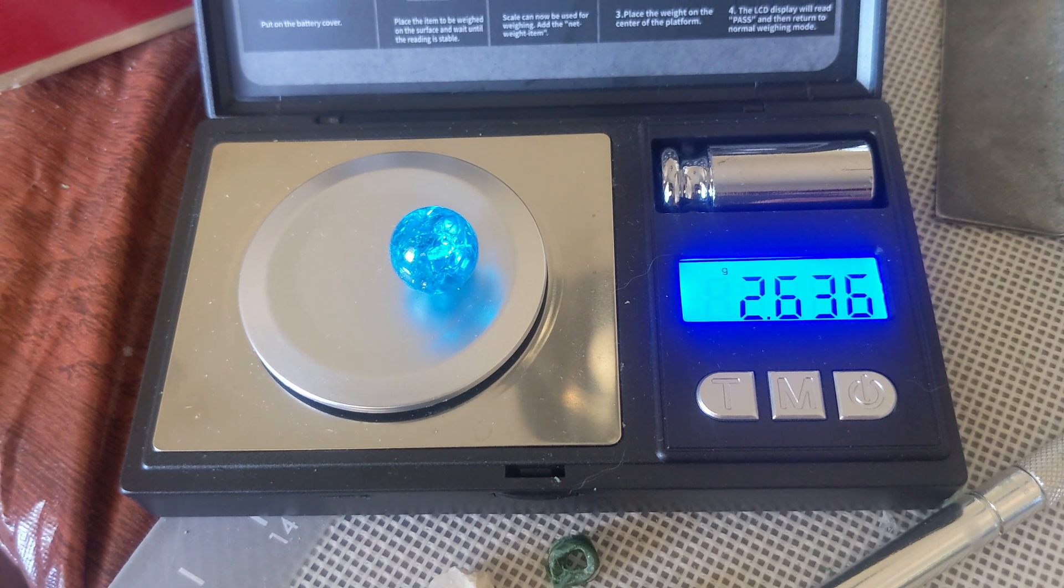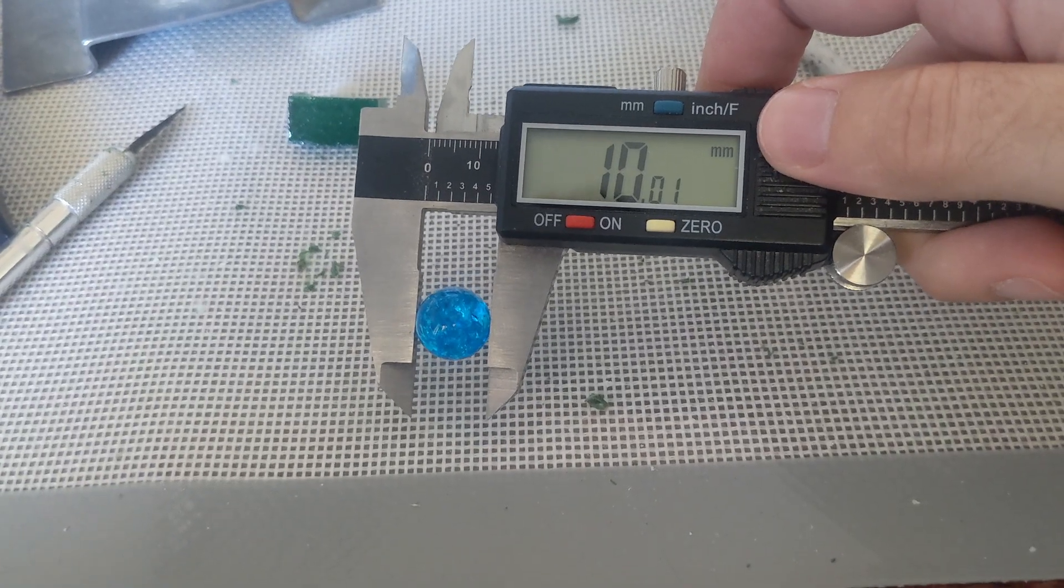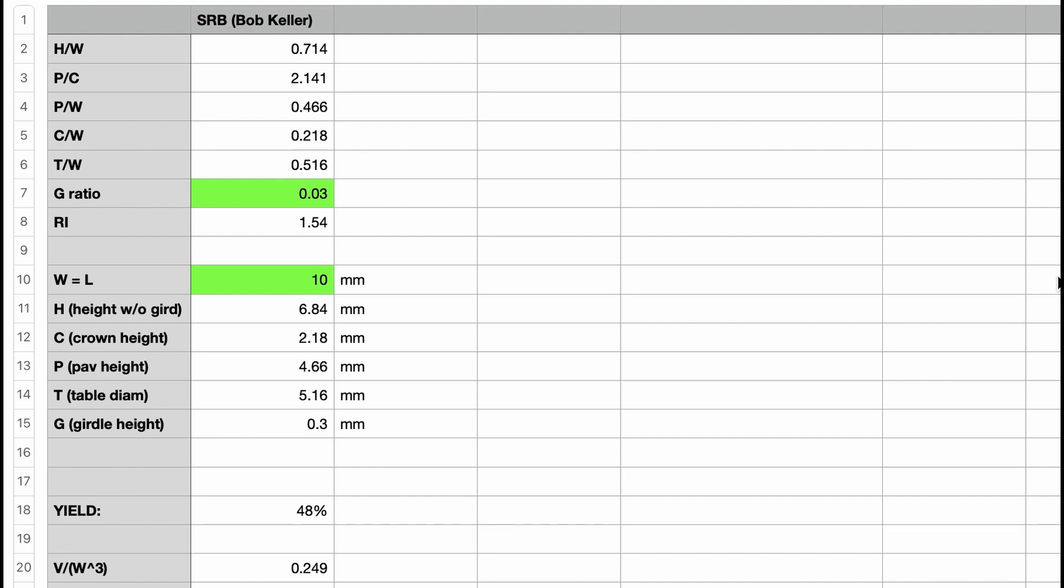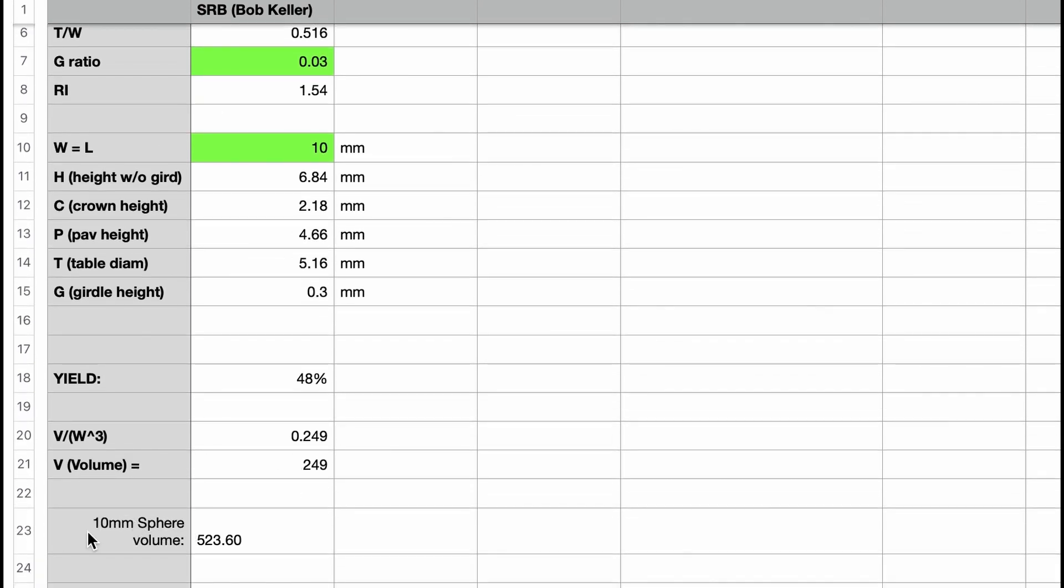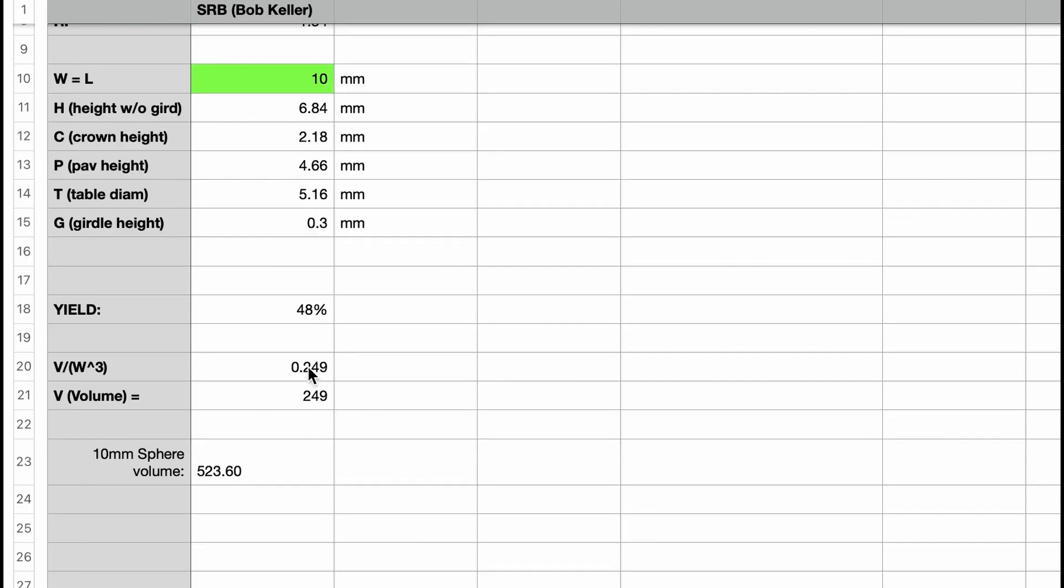Now let's say you have a perfectly spherical alluvial sapphire with a diameter of 10mm. You cut the girdle outline perfectly and maintain the 10mm width. Your meats are perfect and everything cuts and polishes without issue. Your yield for the stone is 48%. Why? Well, for starters, the SRB is wider than it is tall. So your final stone height is only 7.14mm. The starting volume of your perfect sphere was about 525mm³. Your final volume is 249mm³, based on the V to W³ ratio from the faceting diagram.